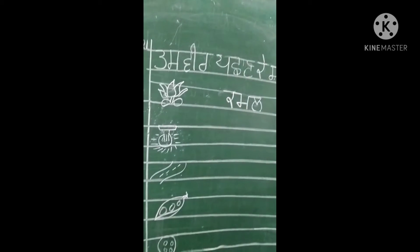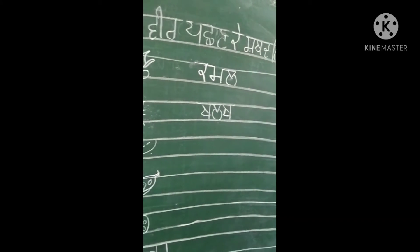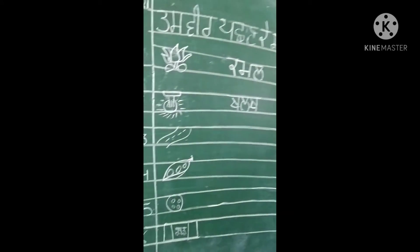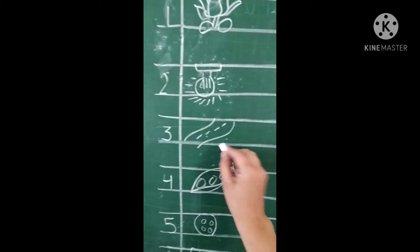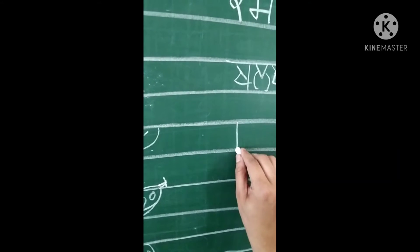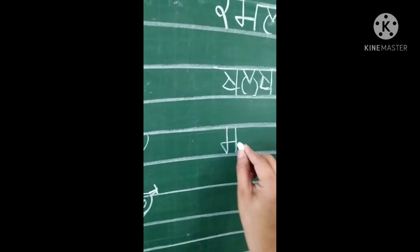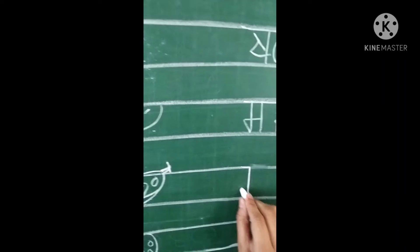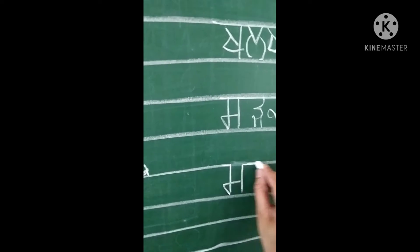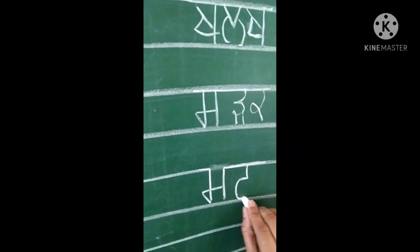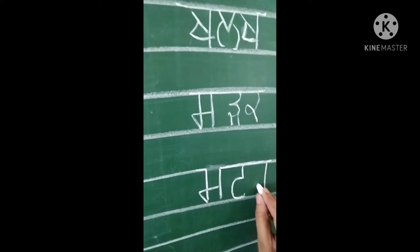What is this? This is Kamal. Kakka, Mamma, Lalla, Kamal. Kakka, Mamma, Lalla, Kamal.